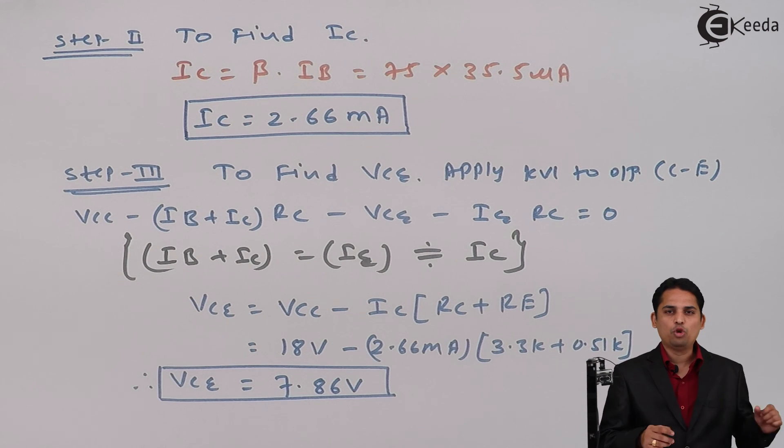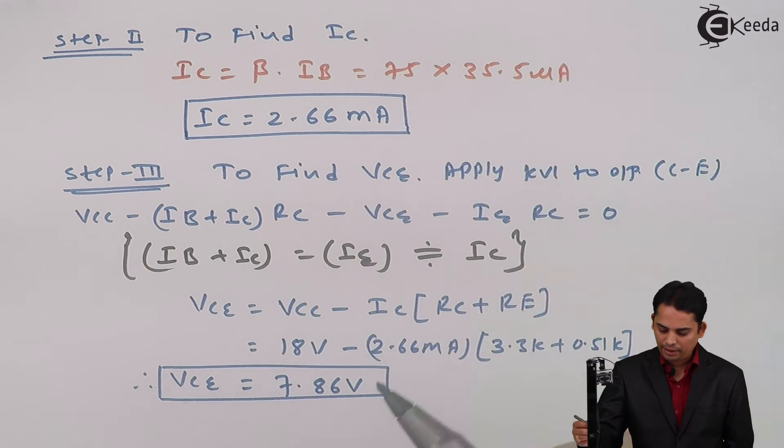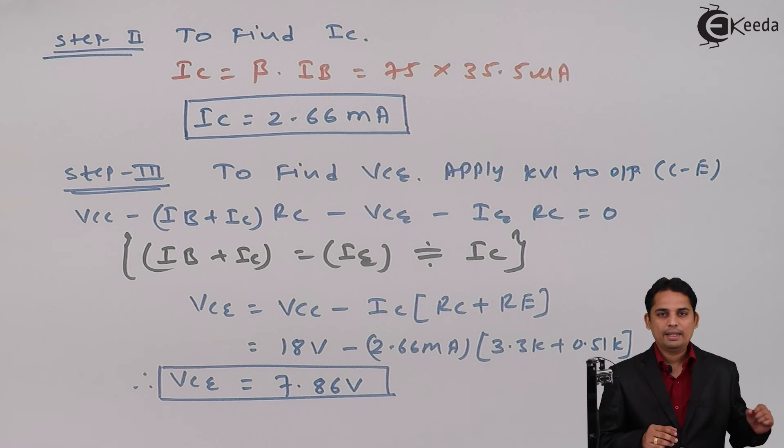We cannot write Q point because in the question they have asked you to determine IC and VCE. So here we have got the value of IC, that is collector current, and voltage between collector to emitter 7.86 volts, as asked in the problem. So by simply applying three steps I have got collector current and voltage between collector to emitter. Thank you.